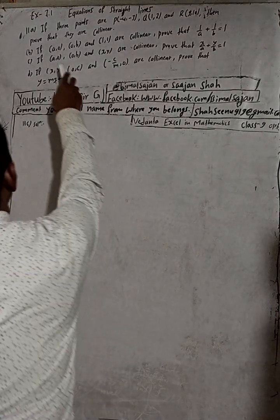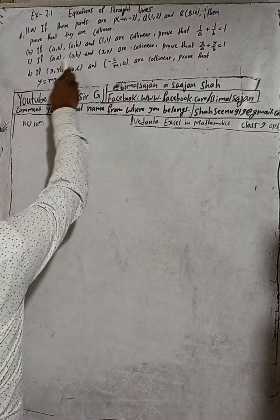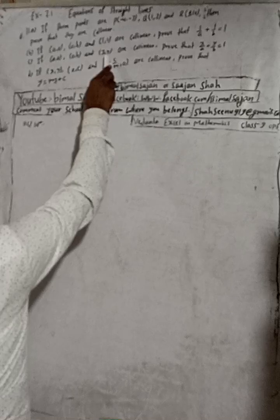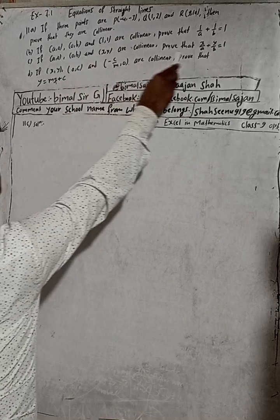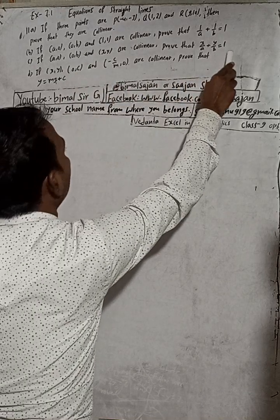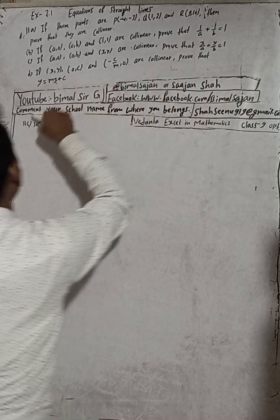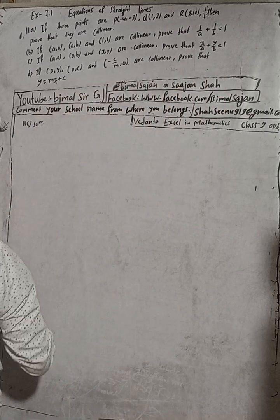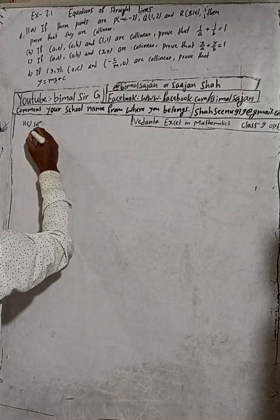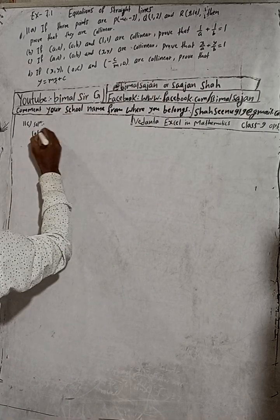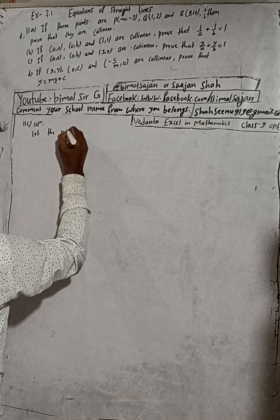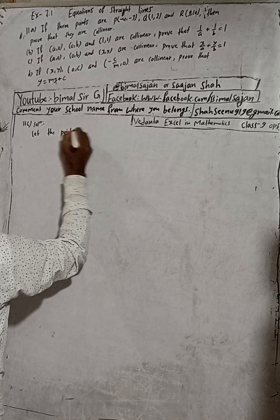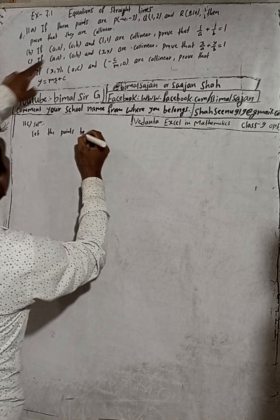Here the question is: if (a, 0), (0, b) and (x, y) are collinear, prove that x/a plus y/b is equal to 1. Now let's look at the solution.